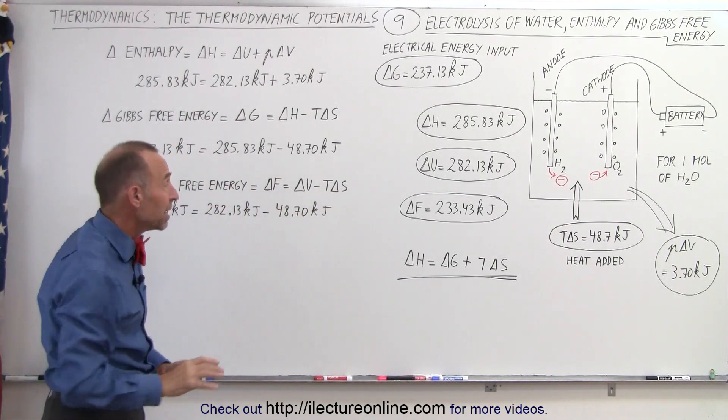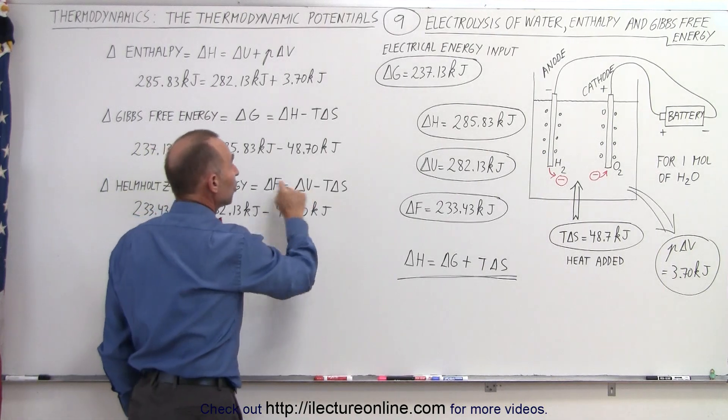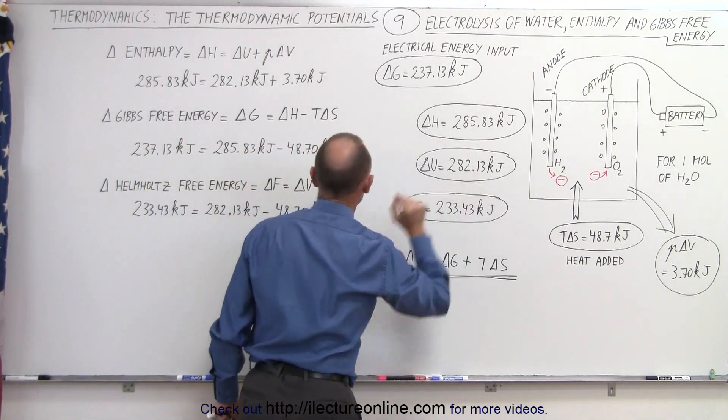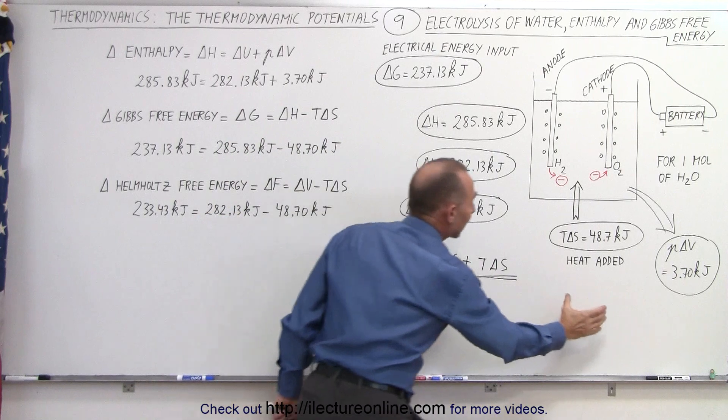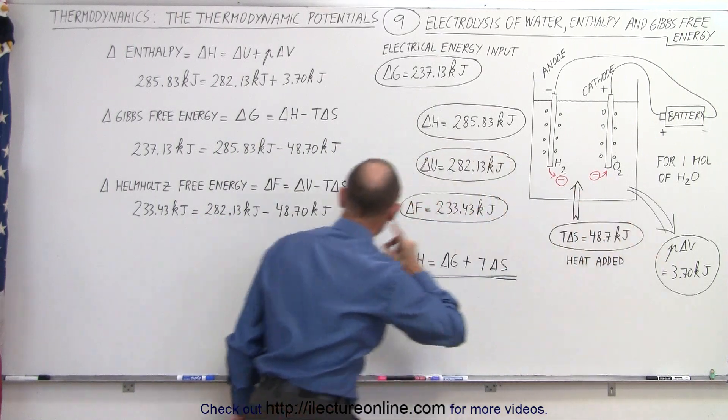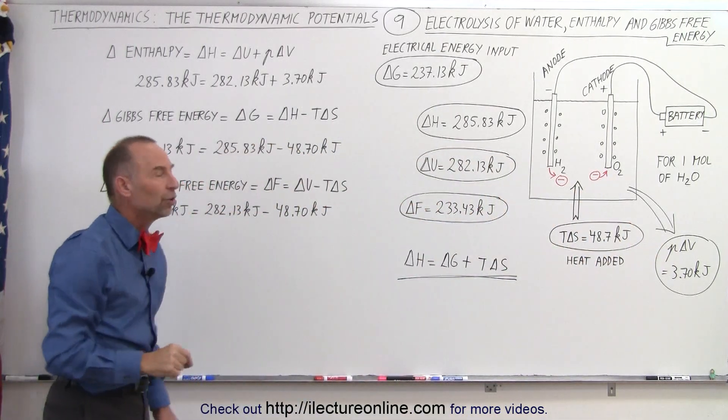So the internal energy minus this T delta S term again. Again, we don't know yet what it means. But if we take the internal energy, 282.13, and we take away the heat added to the system, we end up with what we call the Helmholtz free energy.